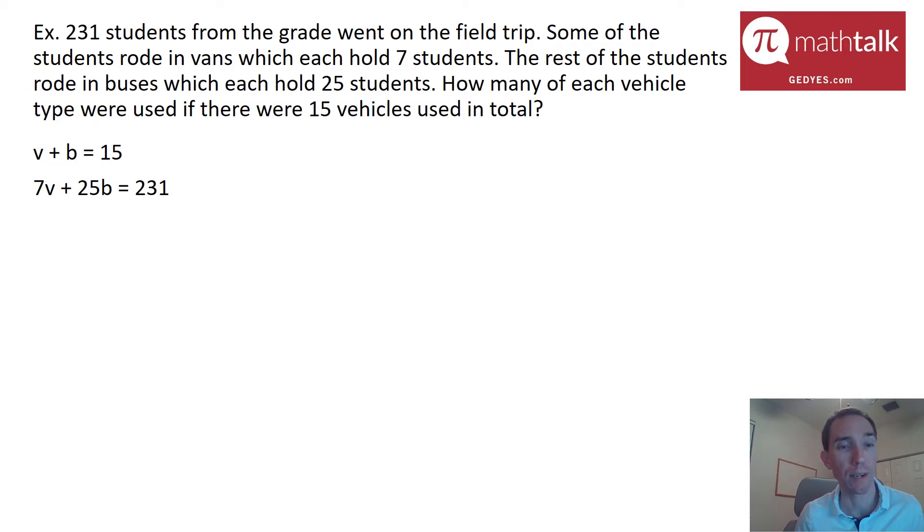So in this case, I said I wanted to get rid of the vans. So in order for me to do that, I need both of the v coefficients to either be 7 or one to be 7, one to be negative 7. So I'm going to go ahead and multiply my first equation by 7. That way both v's or vans are 7. And when you do this, you have to multiply the entire first equation by 7. That means every piece of it. And so when I do that, I get 7v, 7 vans plus 7 buses equals 105, which is 15 times 7. And then the second equation stays the same.